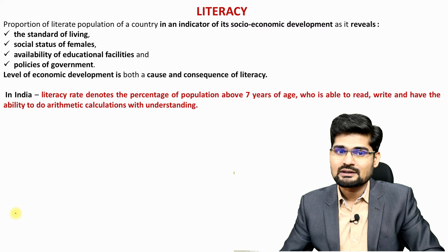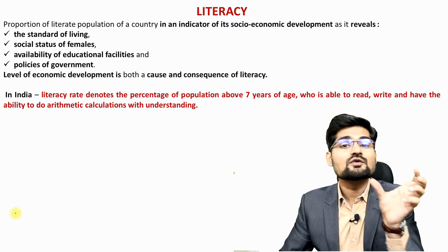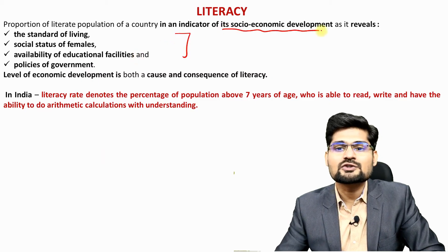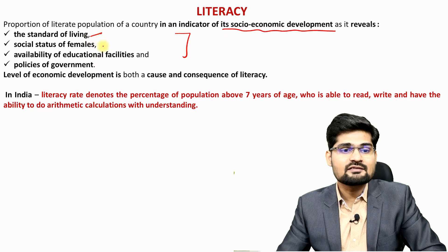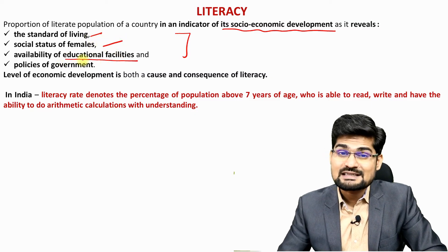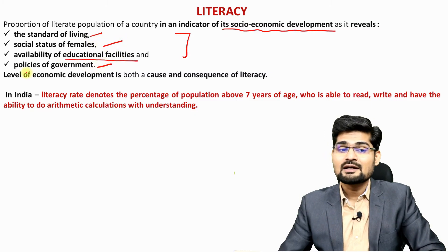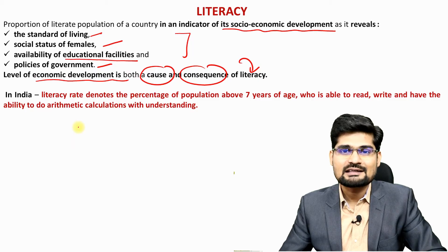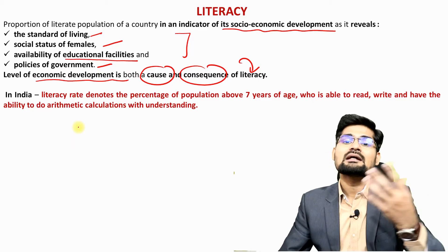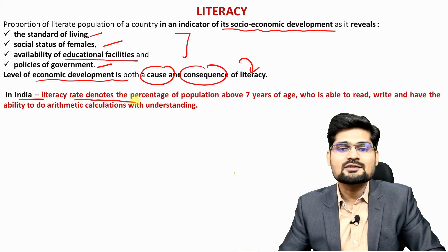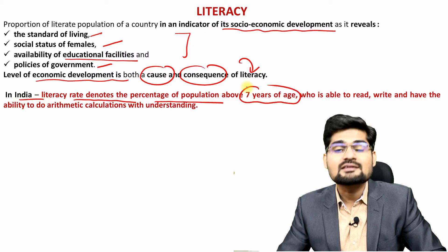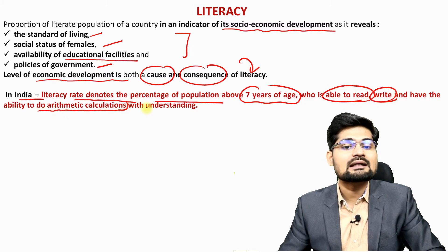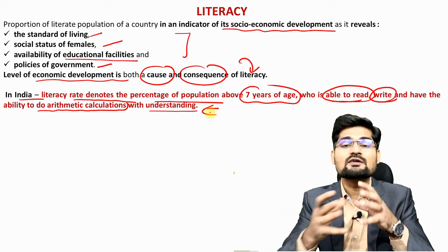Literacy is another component of population composition. It is an indicator of socioeconomic development, revealing standards of living, social status of females, availability of education facilities and government policies. The level of economic development is both a cause and consequence of literacy. Internationally, a literate person is someone who can read and write. In India, literacy rate denotes the percentage of the population above seven years of age who can read, write and perform arithmetic calculations with understanding.